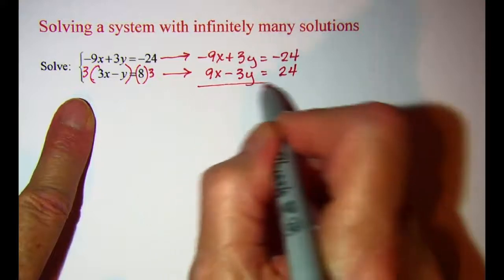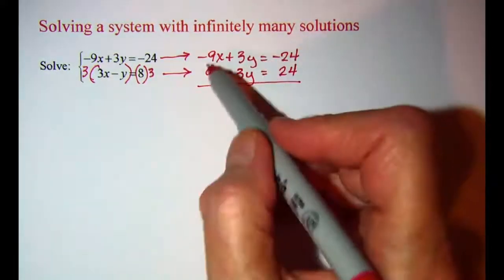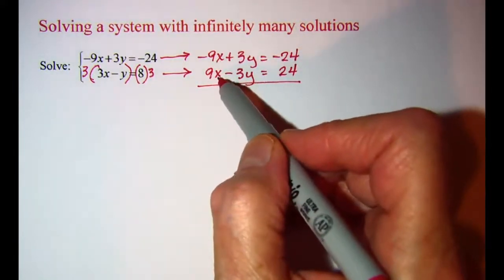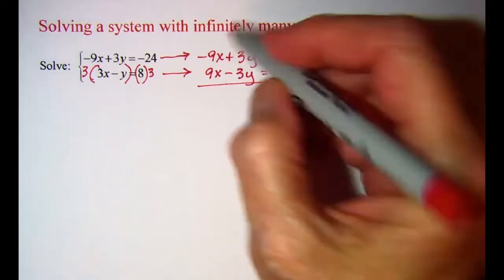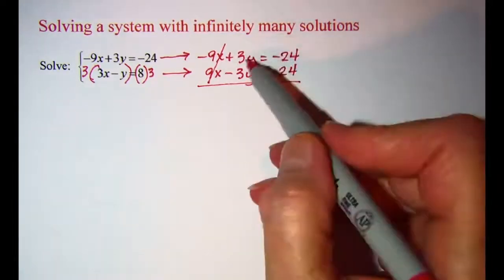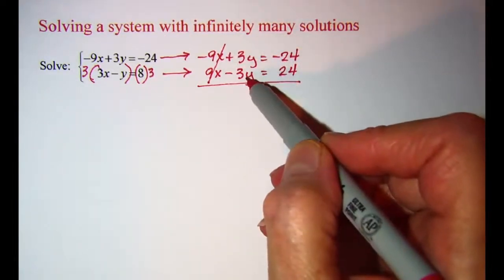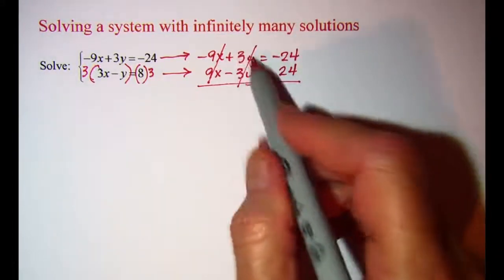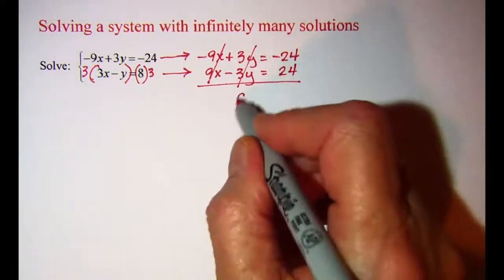And when I add these together, negative 9x and positive 9x, those cancel off. Positive 3y and negative 3y, those cancel off. Remember, if everything cancels off, you need to write a 0.